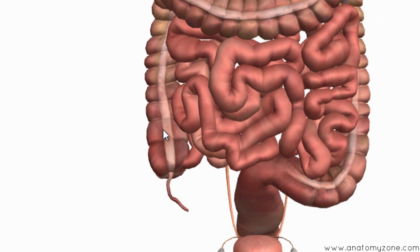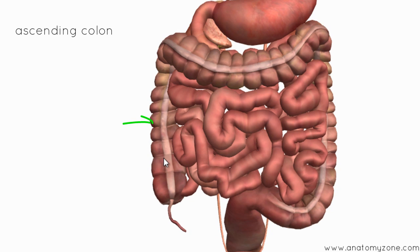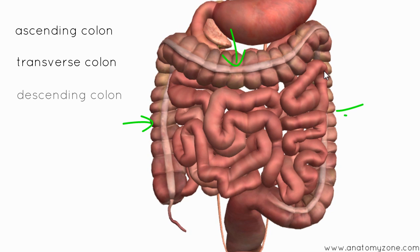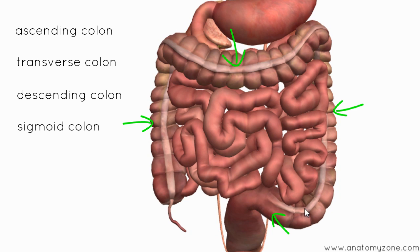The colon is separated into four parts. You've got the ascending colon, which is this first part on the right which ascends. Then you've got the transverse colon, which runs horizontally. Then there's the descending colon, which descends down into the last part called the sigmoid colon, which is this curved part. The sigmoid colon gets its name because it's S-shaped — the Greek symbol sigma is the letter S.